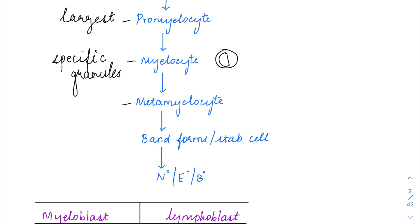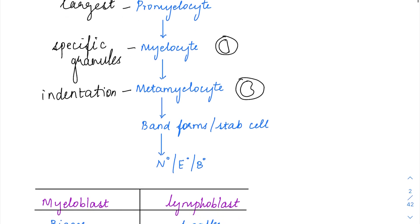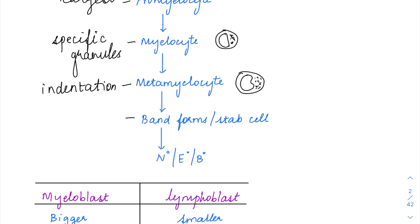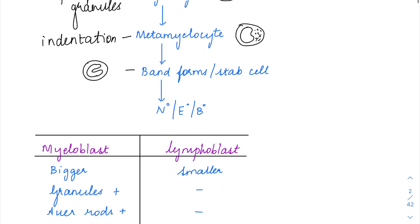Next comes the metamyelocyte, in which the indentation starts. The cell begins to have an indentation in the nucleus. Then comes the band forms, where the indentation deepens so that the nuclear lobes form parallel arms. Then in neutrophils, eosinophils, and basophils, the nucleus has become lobated — commonly trilobated.